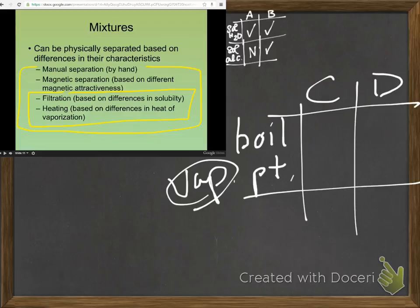So we've got a mixture of C and D, they're both solids. At some point, presumably, they will melt. And at some other point, presumably, they will go from being a liquid to being a gas. What if C has a boiling point of 75 degrees Celsius and D has a boiling point of 150 degrees Celsius? Is there a way to separate those two based on boiling point or vaporization point?